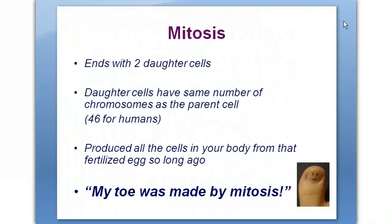Mitosis ends with two daughter cells. You start with one cell, you make two cells — that's during mitotic cell division. Daughter cells have the same number of chromosomes as the parent cell, 46 for us humans. This is a review of your previous class.